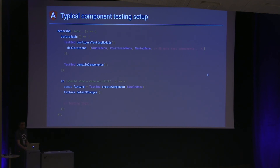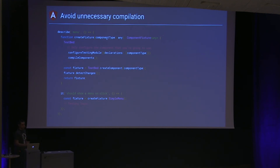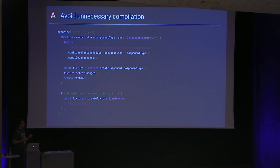What you can do instead is pull the beforeEach out into a function where you only pass the component you're going to compile. You pass in the component type, declare only that component, compile it, and return the fixture immediately. This ensures you only compile the components you're going to need. Just doing this for one component sped up the unit test by something like 60%, which can make you a lot more productive if you're doing test-driven development.